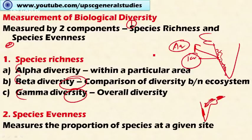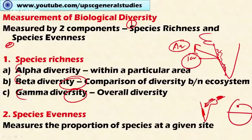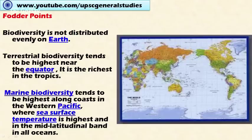The second component of measuring biodiversity is species evenness, which measures the proportion of species at a given site. Low evenness indicates that few species dominate the site. Species evenness is lower in the temperate regions of the world, where fewer species are present, and higher in the tropical regions of the world.